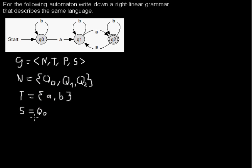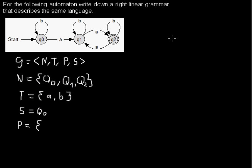The interesting part are the production rules. When you have a right linear grammar, that means on the left-hand side of the rule you have a non-terminal, and on the right-hand side of the rule you have a terminal and a non-terminal. That's a right linear grammar because you always process the rightmost non-terminal.